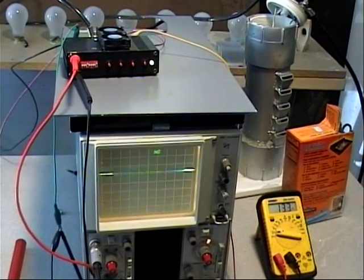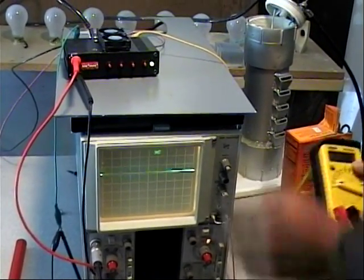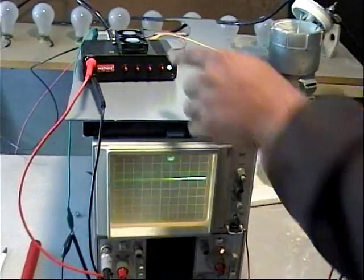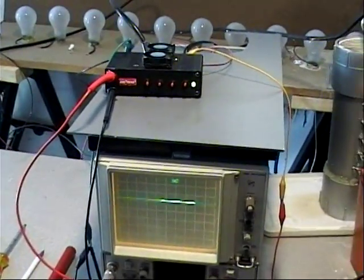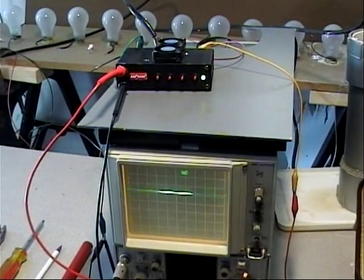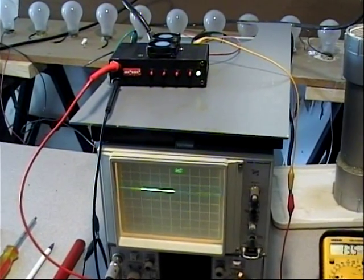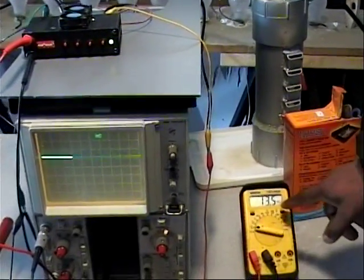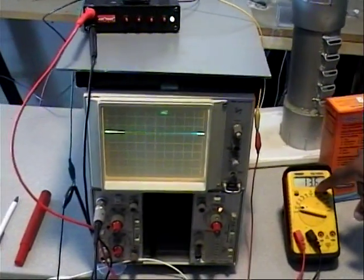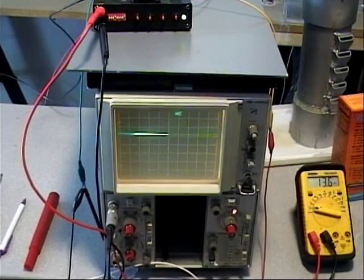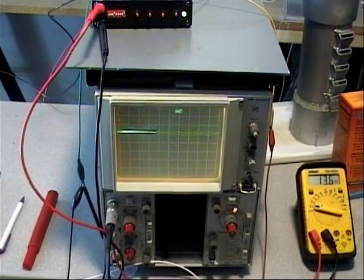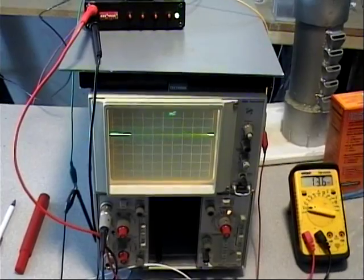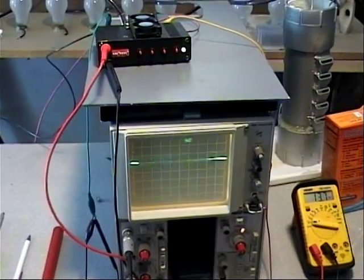I'm connected right to these inserts for the jacks for the probes, connected right to the multimeter. And so, right now, we're drawing 13.6 amps. As this cell heats up, your current draw begins to increase.